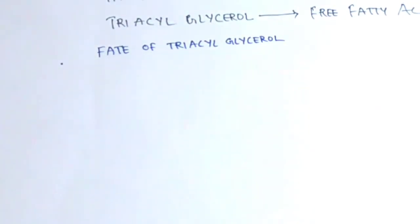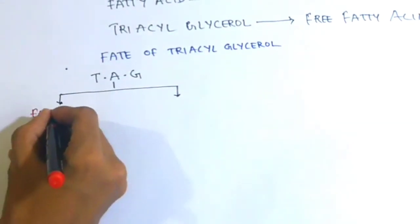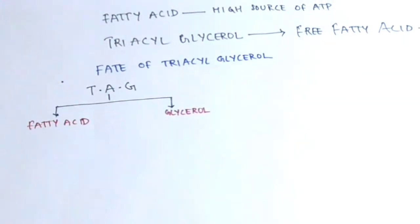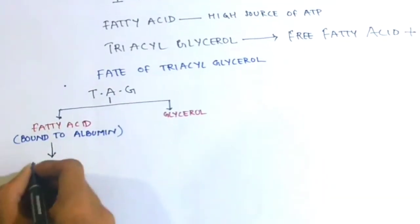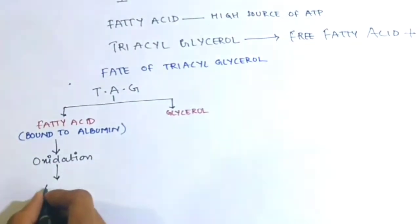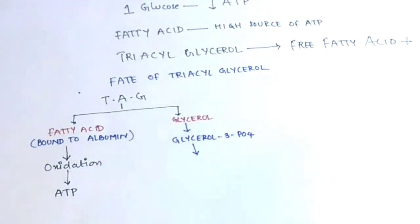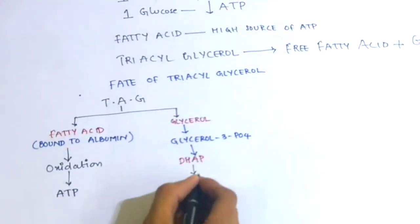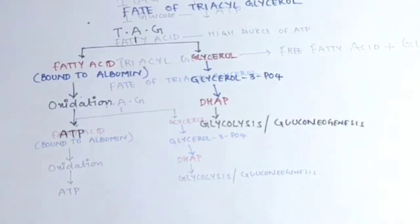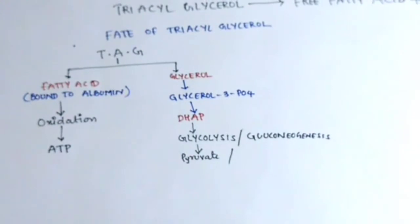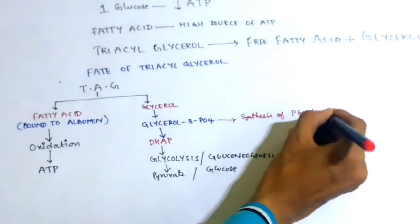Let's now see the fate of triacylglycerol. When a molecule of triacylglycerol is hydrolyzed, we get a fatty acid and one molecule of glycerol. This fatty acid is bound to albumin. When this fatty acid undergoes oxidation, we get ATP molecules. The glycerol molecule undergoes phosphorylation to form glycerol-3-phosphate and isomerization to form dihydroxyacetone phosphate, which is used in glycolysis or gluconeogenesis to form pyruvate or glucose. Glycerol-3-phosphate is also an important precursor for synthesis of phospholipids.